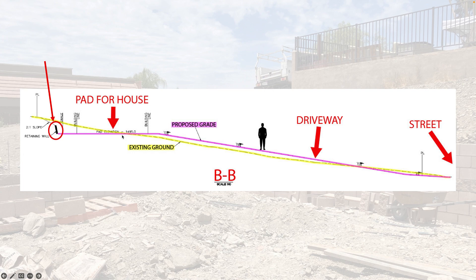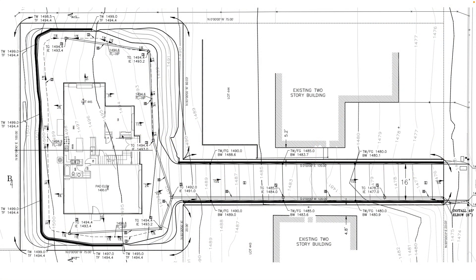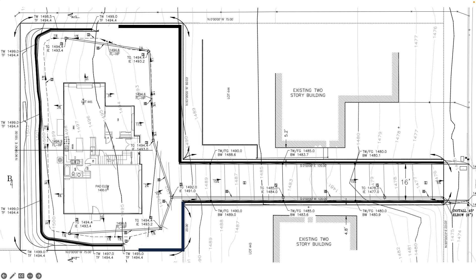Since we cut into the slope, we now have to install retaining walls. In this plan view of the house, the black bold lines along the rear are retaining walls, and the two on either side of the driveway are also retaining walls. Originally we told the engineer we wanted as little retaining walls as possible to save money, but once we started grading we decided it would be best to add retaining walls in the front so we wouldn't have to slope those areas, giving us more usable livable space outside the home.